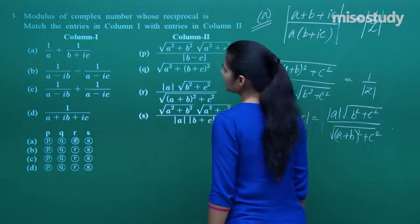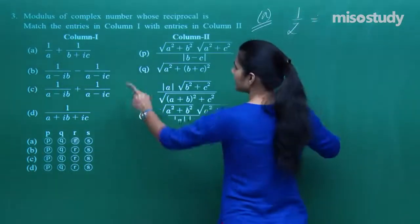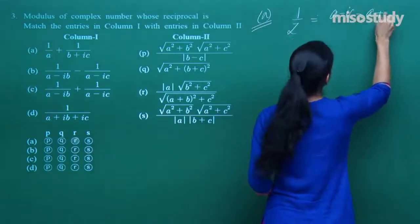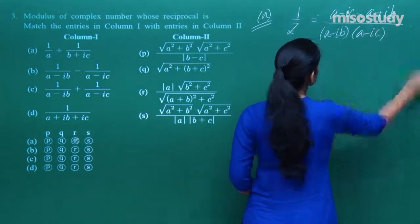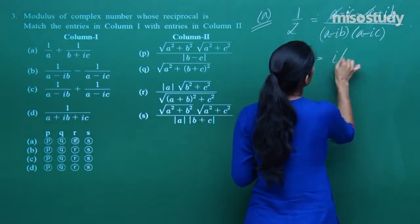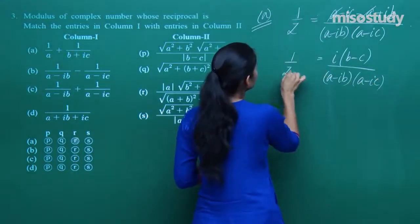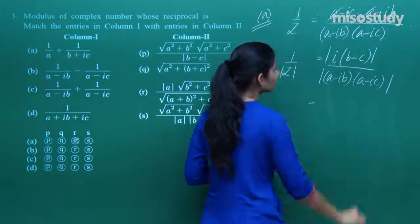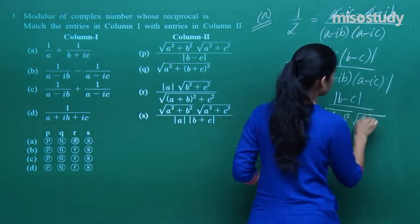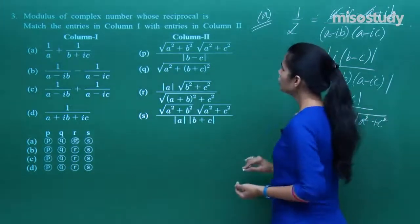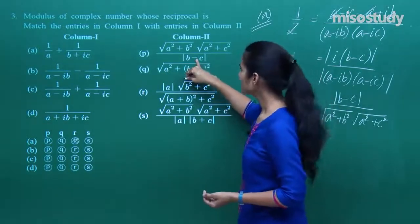For part b: 1/(a - ib) minus 1/(a - ic). Combining, numerator becomes i(b - c) and denominator is (a - ib)(a - ic). Taking modulus: |b - c| divided by √(a² + b²)·√(a² + c²). So mod z equals √(a² + b²)·√(a² + c²) / |b - c|. This matches entry b.